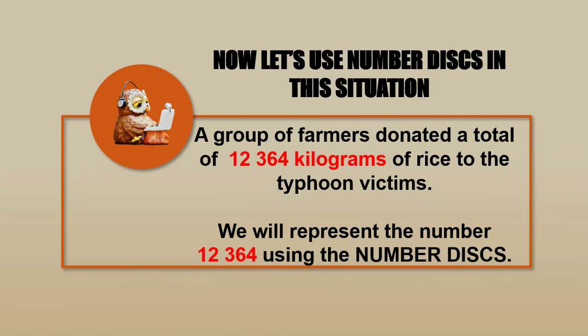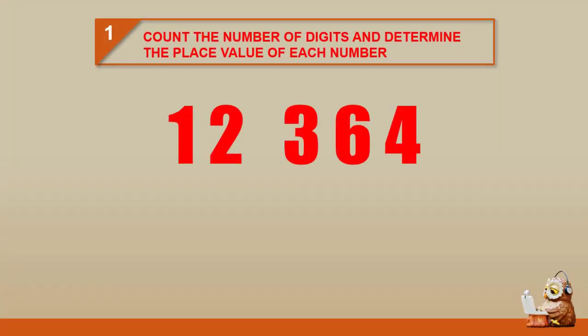The number was 12,364. Step 1: Count the number of digits in the number. 12,364 has 5 digits. Then know the place value of each digit.